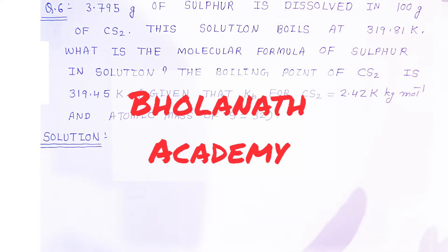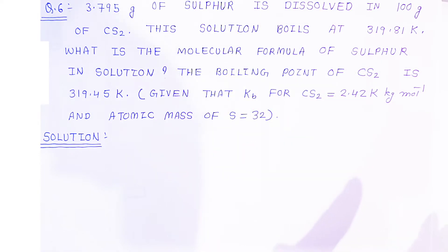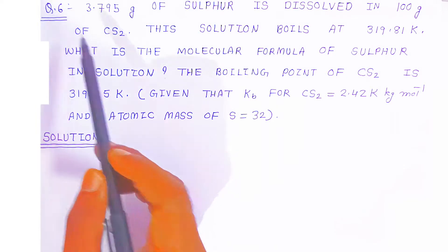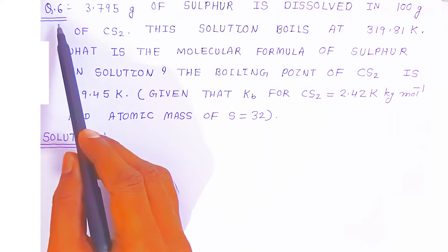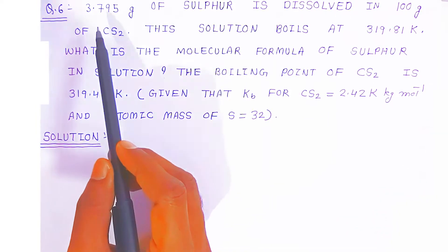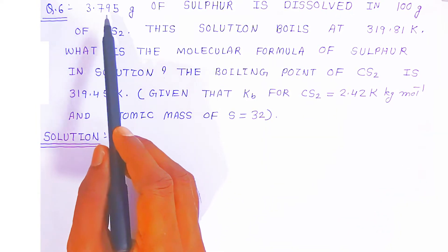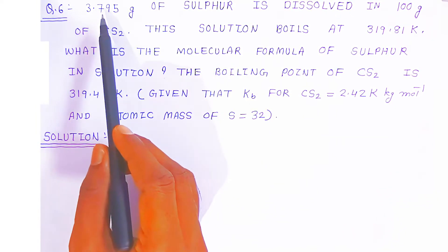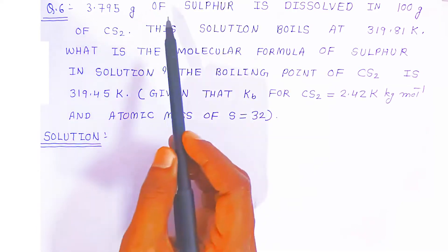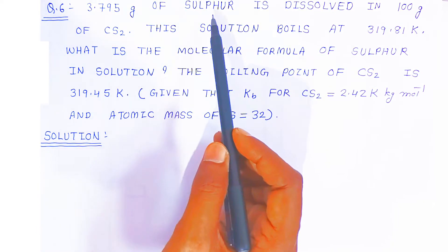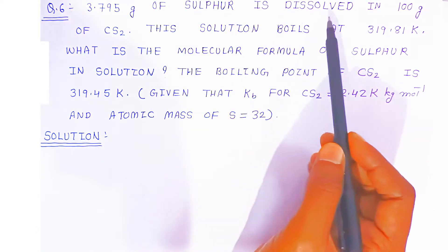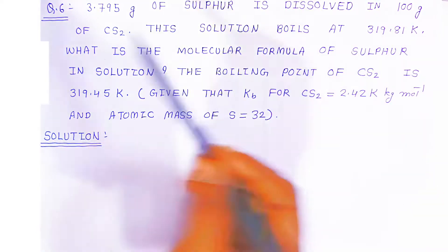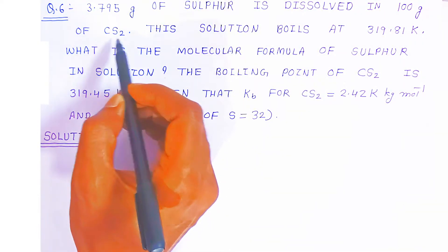Hello students, once again welcome to Bholanath Academy. In this video we are going to see question number six. In question number six, it is given that 3.795 gram of sulfur is dissolved in 100 gram of carbon disulfide.